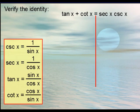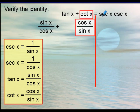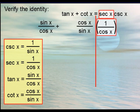Recall that the tangent is sine over cosine. The cotangent is cosine over sine. The secant is going to be one over cosine. And the cosecant is one over sine.